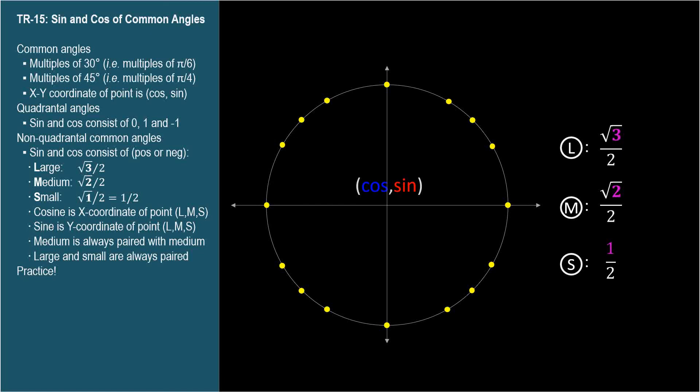Please practice. Your goal at this point should be to draw a circle, label all these common angles in degrees and radians, and write the cosine and sine of each angle.